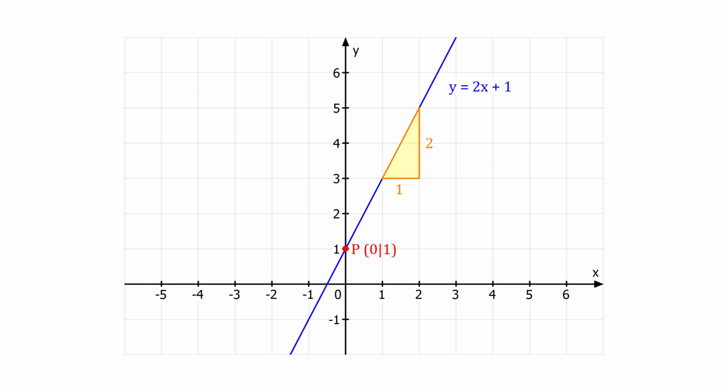So let's go through an example. So as you can see here, we have the x-axis and the y-axis, or the horizontal and vertical axes, and we have the line starting at a certain value, and it's linear. It's increasing a certain amount. We don't have any values for this problem, and we don't need them. But we see that this graph represents the total charge in dollars by an electrician for x hours of work. So this axis is the hours. The electrician charges a one-time fee, which would be represented by the y-intercept, since it only happens once, and then an hourly rate.